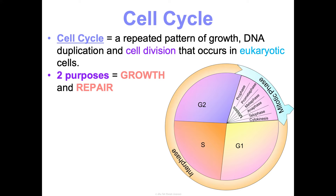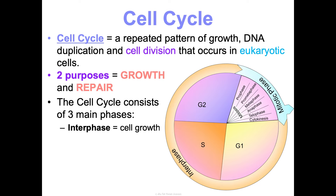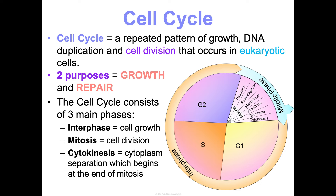Repair is incredibly important too — this process is happening right now, as your hair grows, your skin cells repair, and your liver cells repair. The cell cycle has three main phases: interphase, which is the cell growth phase; mitosis, which is the cell division phase; and then cytokinesis, which is the actual separation of the cytoplasm at the end of mitosis that gives us two cells.